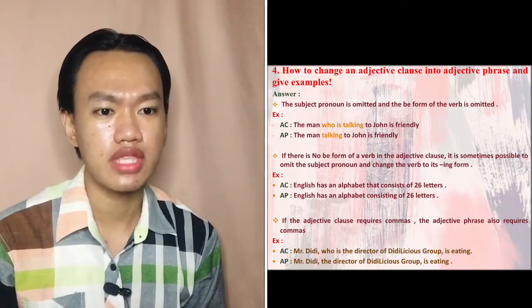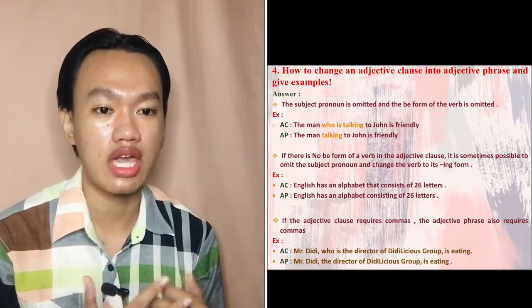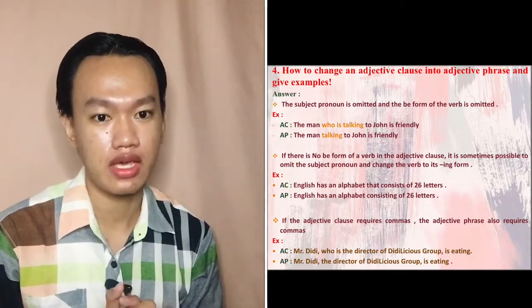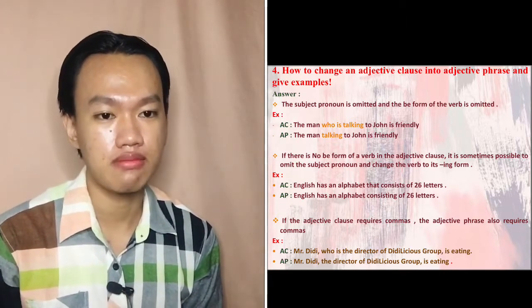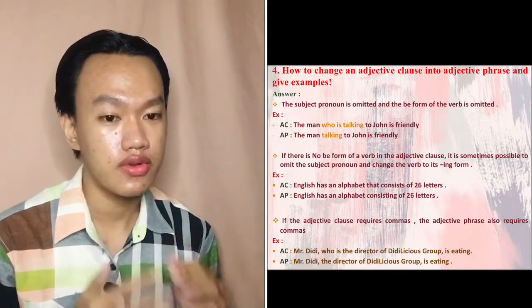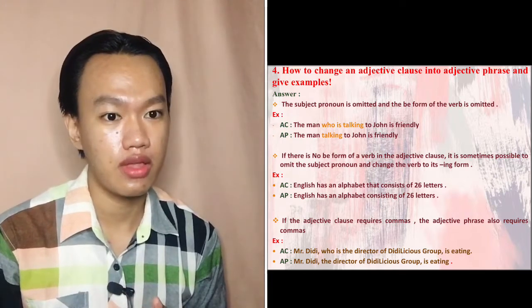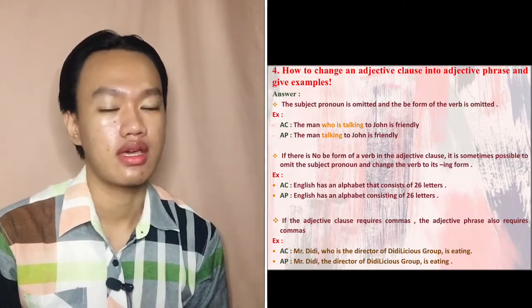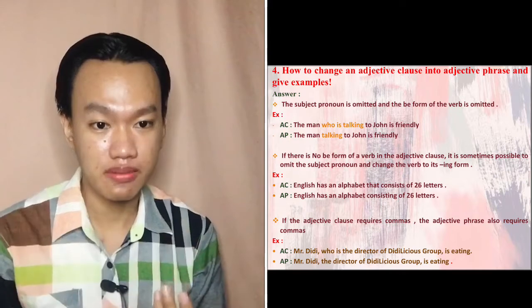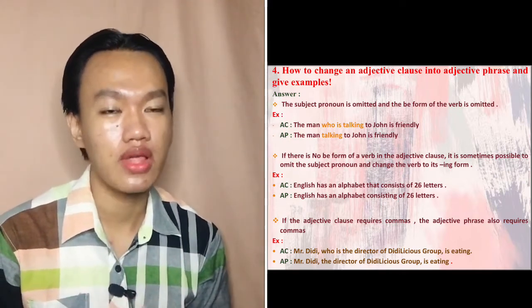Second rule: if there is no be-form of a verb in the adjective clause, it is sometimes possible to omit the subject pronoun and change the verb to its -ing form. Example — adjective clause: 'English has an alphabet that consists of 26 letters.' Adjective phrase: 'English has an alphabet consisting of 26 letters.'